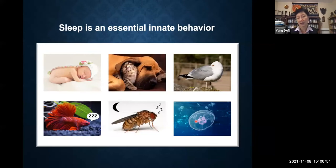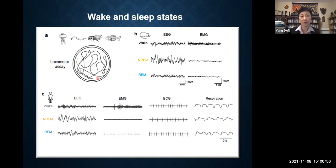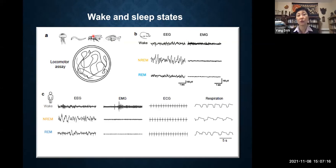For non-mammalian animals — from worms and jellyfish to fish — sleep is scored exclusively based on lack of movement. In order to score a sleep episode, the animal has to stay immobile for a certain amount of time. For flies, I think it's two minutes. And if you apply mild sensory stimulation, like tapping the container, they should show no motor response. So basically the final readout is movement.